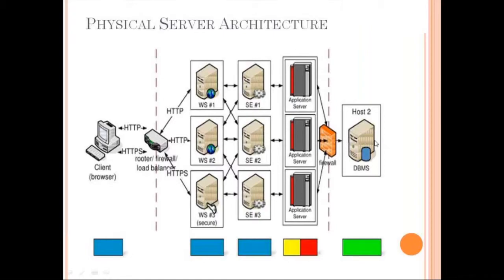Then from the application server there's another firewall before reaching the database. To set up this entire architecture in the early 2000s, it used to take close to a year because you had to procure — meaning buy — load balancers, firewalls, web servers, cache servers, application servers, and finally if you were a middleware person you had to buy an MQ server and related infrastructure, deciding things like whether you need 8GB RAM for your CPU box.